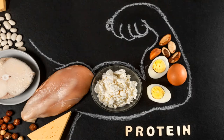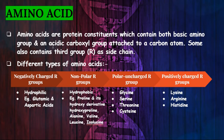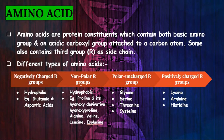To understand protein, let's first understand what amino acids are, as these are the building blocks of proteins. Amino acids are protein constituents which contain both a basic amino group and an acidic carboxyl group attached to a carbon atom. Some also contain a third group R, which is a side chain. Different types of amino acids are negatively charged R groups, non-polar R groups, polar uncharged R groups, and positively charged R groups. Negatively charged R groups are hydrophilic in nature while non-polar R groups are hydrophobic in nature.